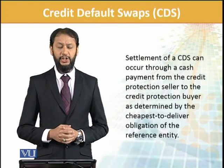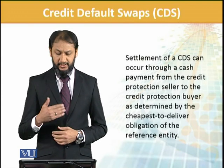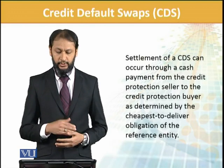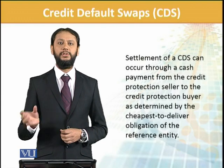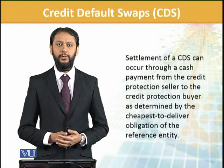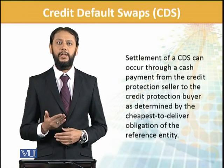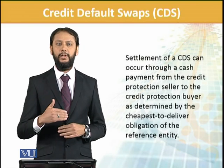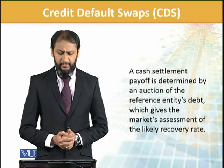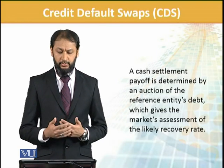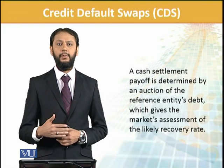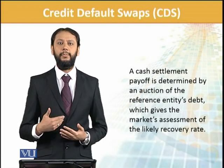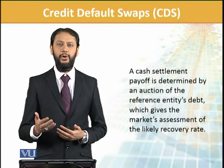Settlement of CDS can occur through cash payment from the credit protection seller to the buyer. If the bond you purchased has defaulted, the seller will compensate you for the loss. However, the loss is compensated based on the cheapest bond in that category — not necessarily a full face value repayment. A cash settlement payoff is determined by the auction of the reference entity's debt: whatever is recovered from the auction, the difference above that is what gets paid. Basically, it is just like insurance for your bond investments.